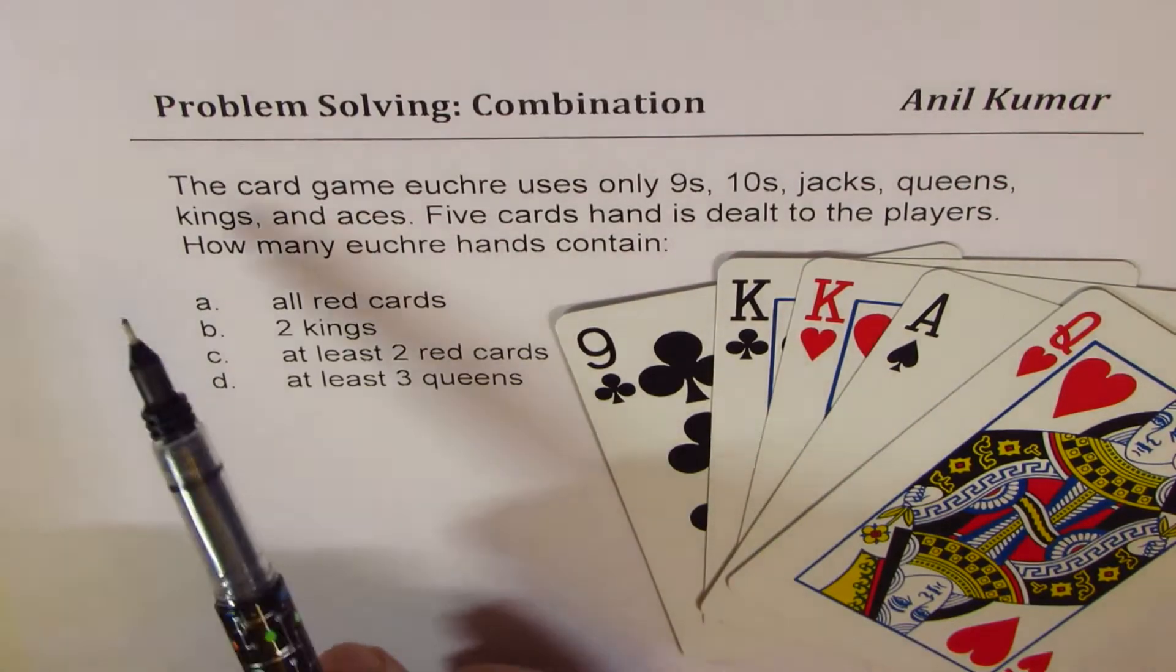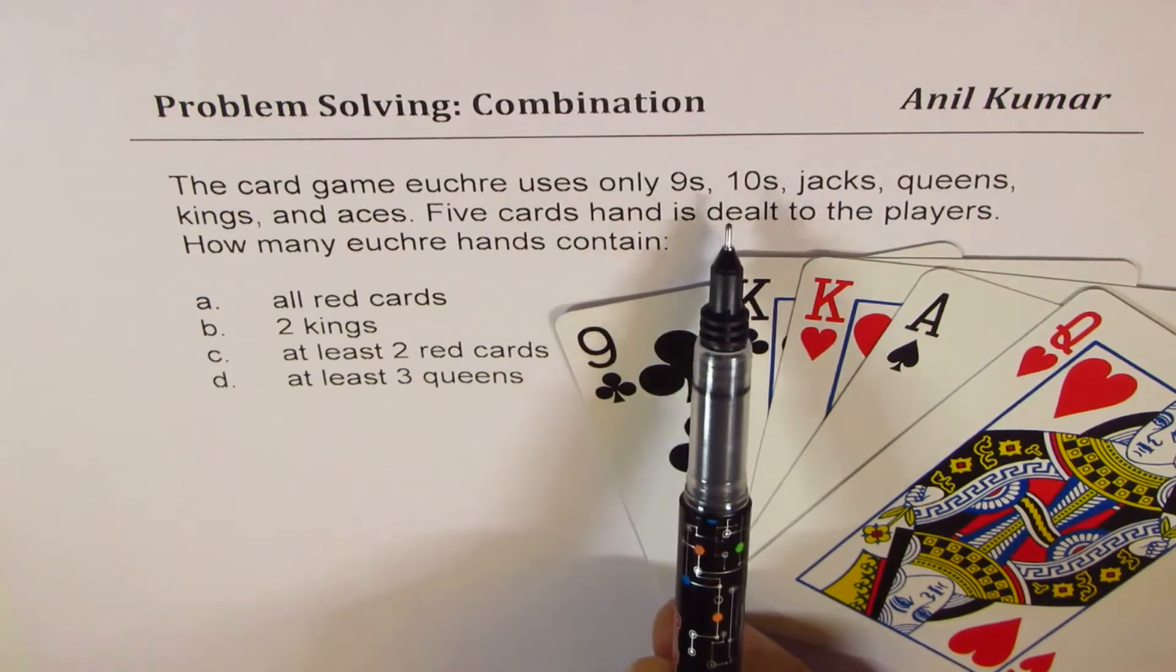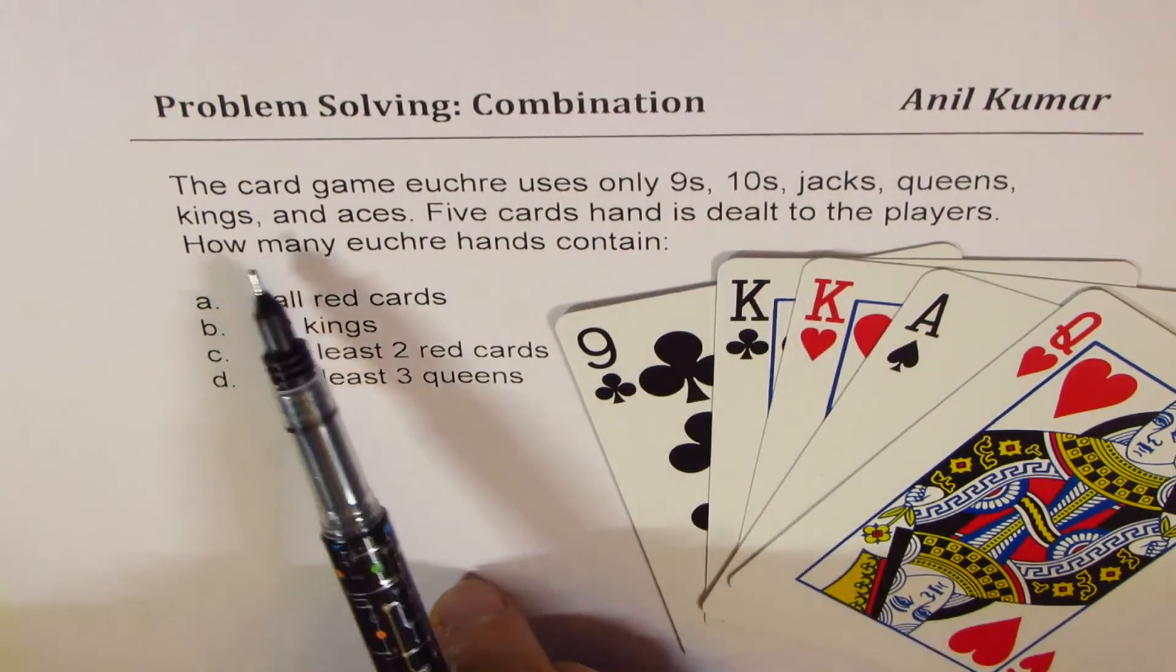The question here is, the card game Euchre uses only nines, tens, jacks, queens, kings, and aces.